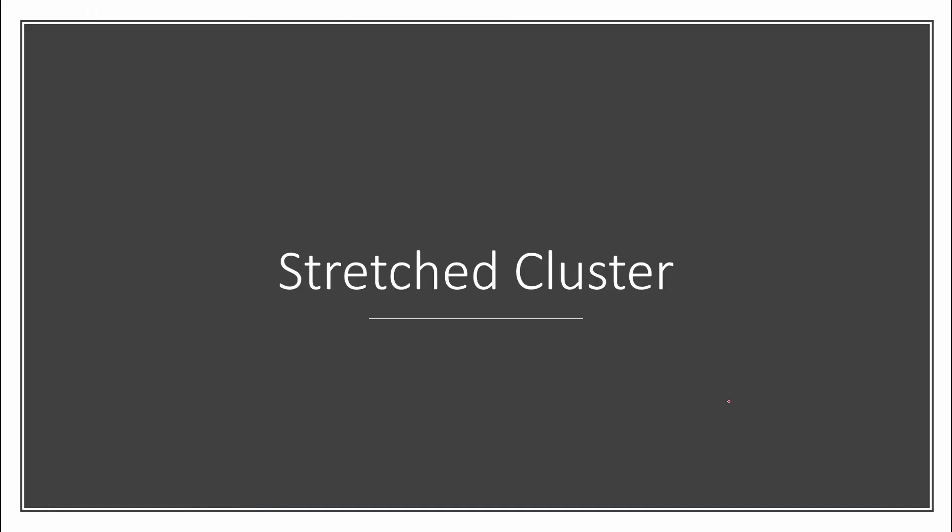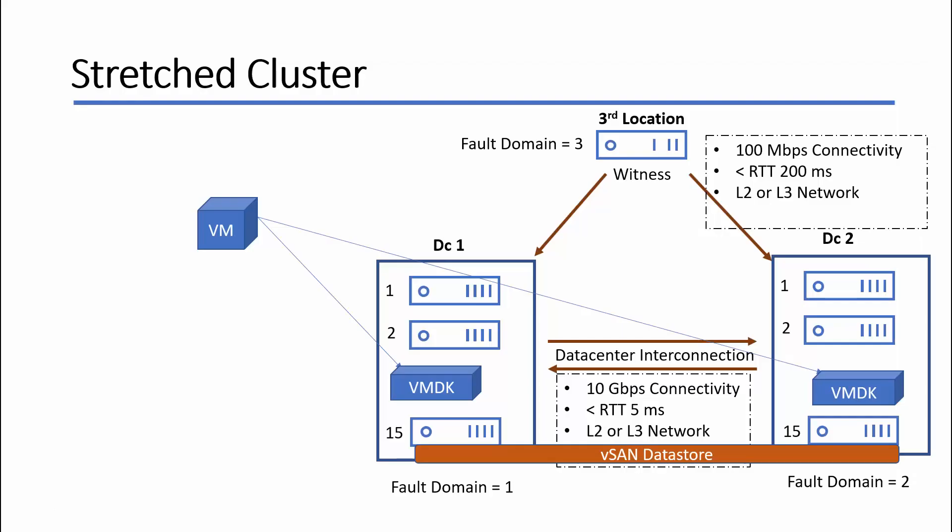A stretched cluster allows a single cluster to operate across geographically separated data centers. This ability to operate two locations as a single cluster gives significant benefits in terms of availability for both planned and unplanned outages. A stretched cluster allows VMs spread across the data centers to act like they are in a single local cluster. For this, the vSAN datastore is shared across the data centers.